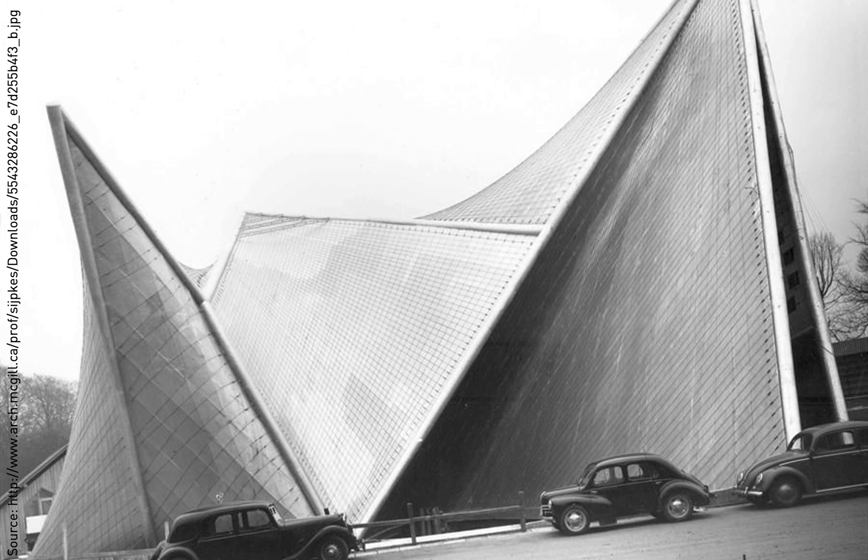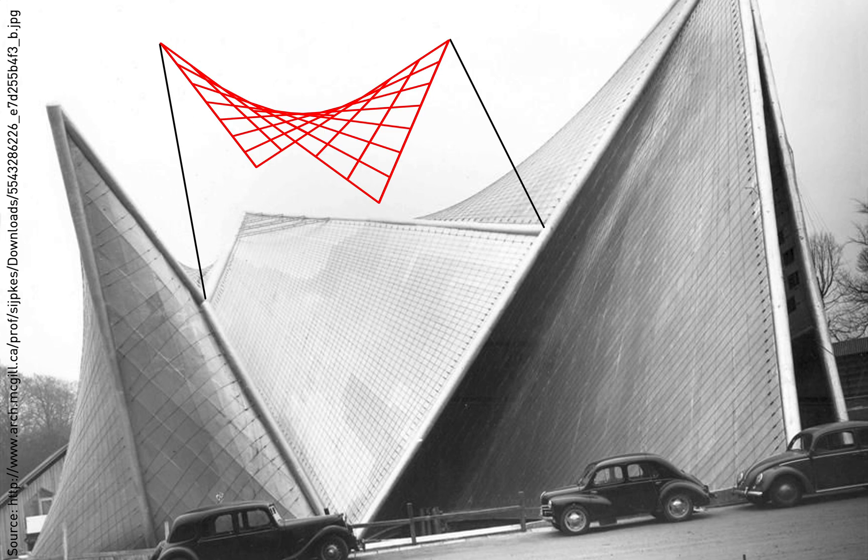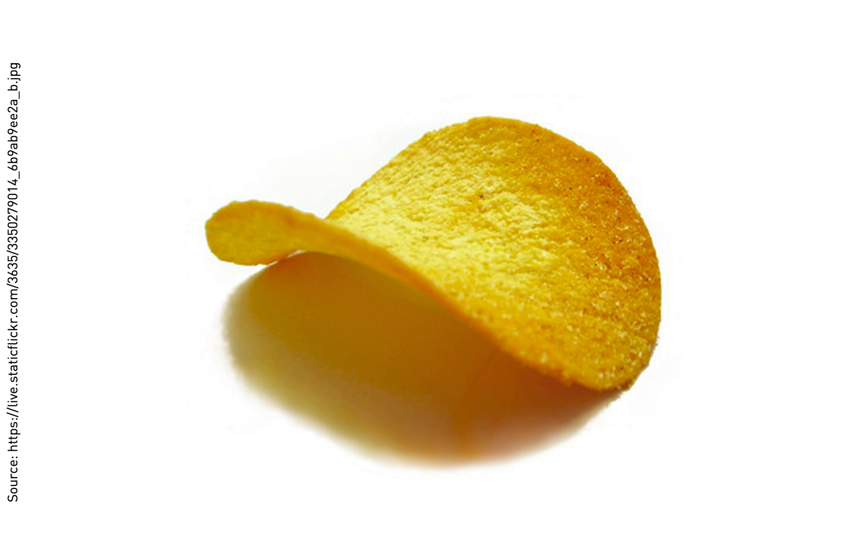To reconcile their aesthetic ambitions for the pavilion with requirements and constraints related to its fabrication and construction, as well as to its structural performance, Le Corbusier and Xenakis composed the pavilion as an arrangement of nine hyperbolic paraboloids. The hyperbolic paraboloid is a mathematically defined, double-curved surface resembling the saddle shape of a potato chip.